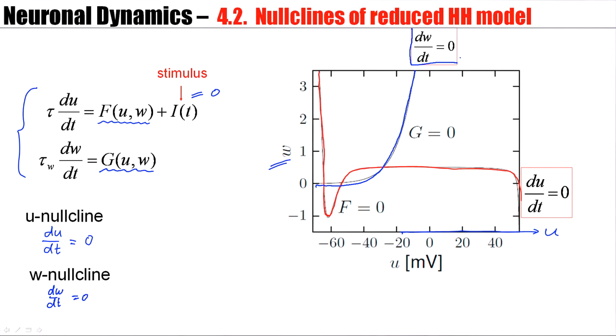Now there are very special points where du/dt is zero and dw/dt is zero. These are the points where the two lines cross. These are called the fixed points. du/dt and dw/dt are both zero, which means there's no change at all.